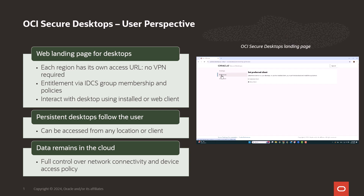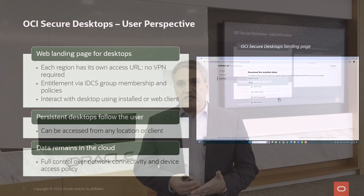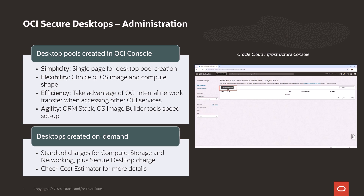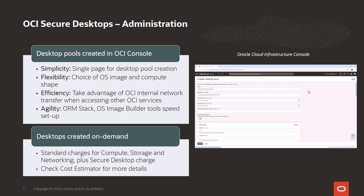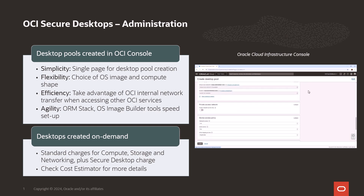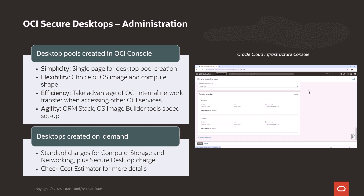All data remains in the cloud and there is full control over network connectivity and device access policy. Here is the administrator perspective. Desktop pools are created in the OCI console. Management is simplified by implementing a single page for pool creation. Initially, all desktops in the pool are identical. You choose the desired OS image and compute shape for the desktops, and all desktops in the pool are created on demand as compute instances in your tenancy. You can take full advantage of OCI internal network transfer when accessing other OCI services. To speed up the process of preparing your tenancy for deployment of secure desktops, we provide you with tools such as Oracle Resource Manager stack and OS image builder, delivering a more agile user experience.